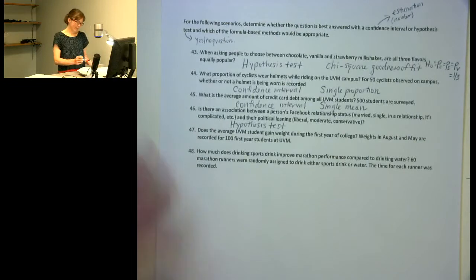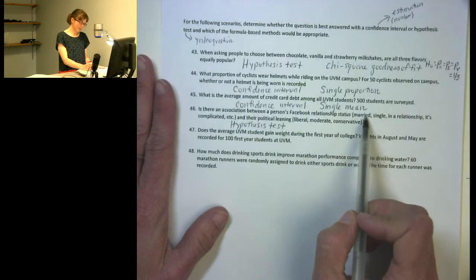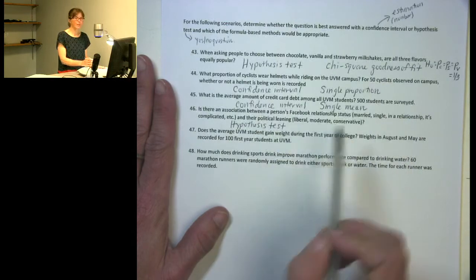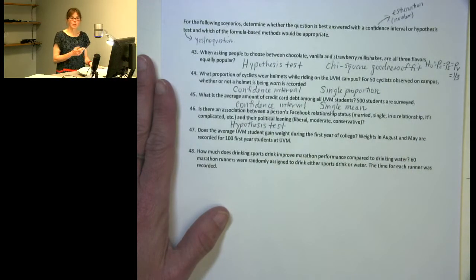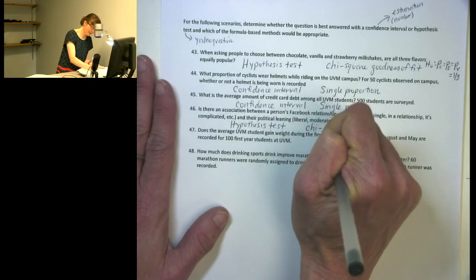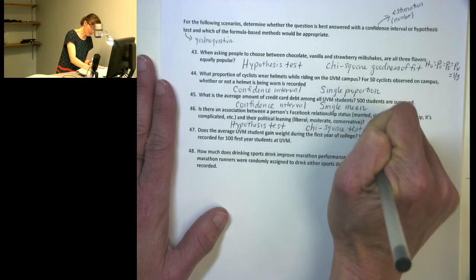And the types of variables I have, I have two categorical variables. But I can see that they, each of them has more than two categories. So I can't do just a test for a difference in proportions, because I'd have to have both variables having just two categories to do that. So instead, this is a situation where I could use the chi-square test for association.